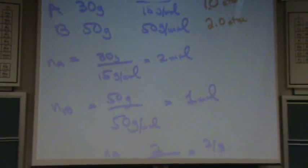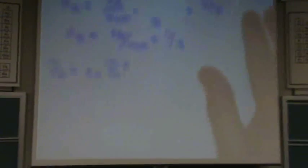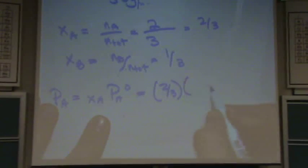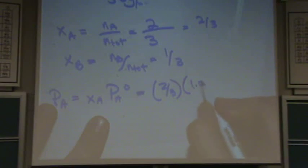That's kind of ridiculous too, but that's okay, I just made it up. So in this particular problem, XA is 2 thirds and the PA naught is 1.0 atmospheres, which would equal 2 thirds atmosphere.